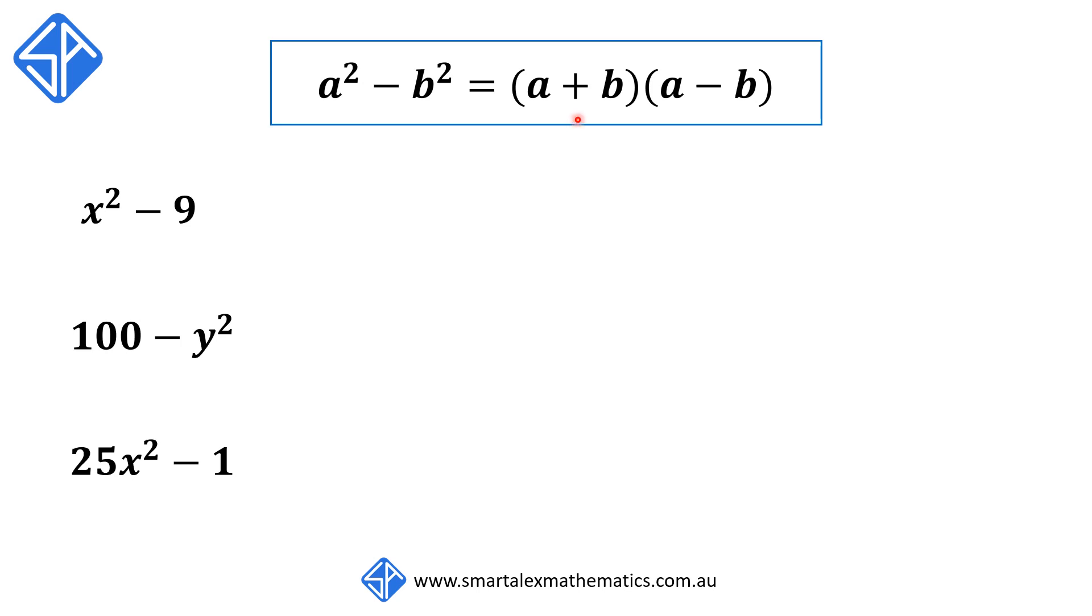When we expand (a + b)(a - b), we get the expression a² - b². This is what we call a difference of two squares. We can use this knowledge so that any time we see expressions written in this form, we use this identity to help us with the factorization.